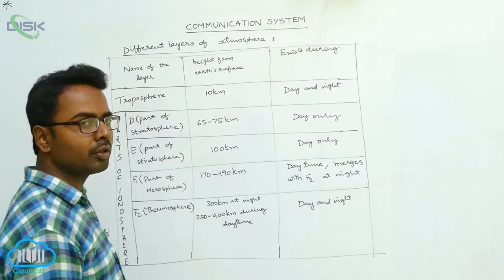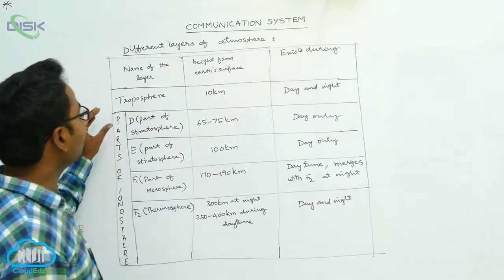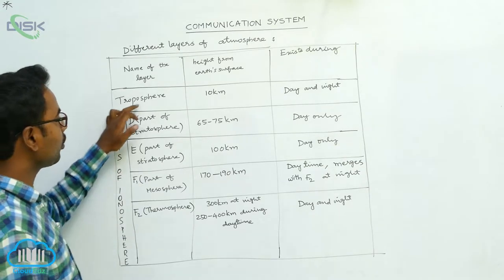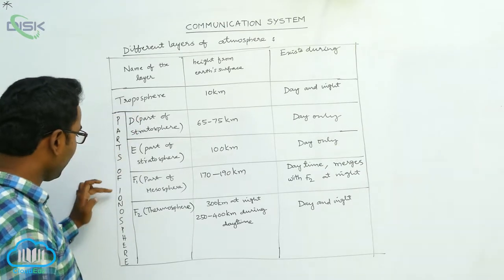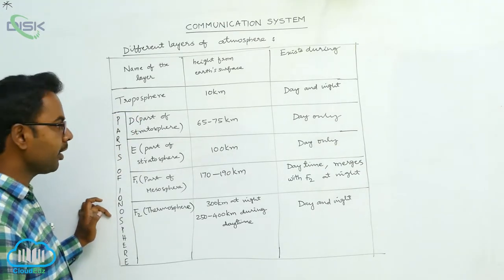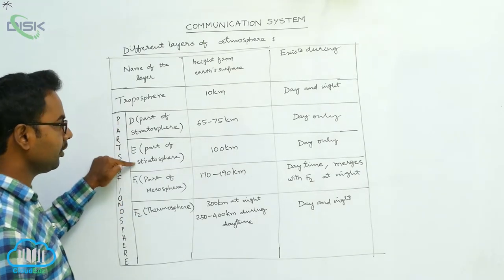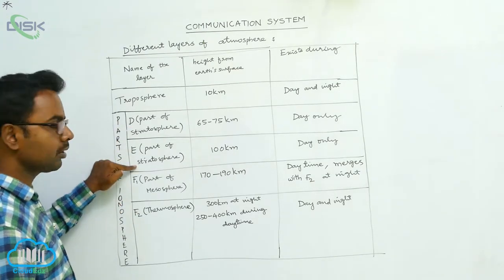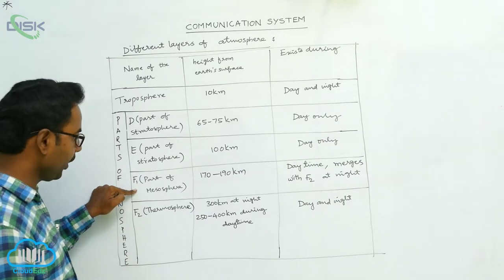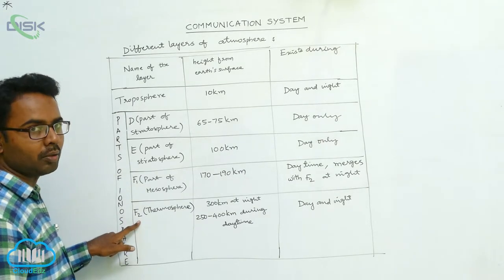Here we see different layers of atmosphere. In the atmosphere there are different layers basically: troposphere and ionosphere. The ionosphere is divided into four parts — D and E, which are parts of the stratosphere; F1 is the part of mesosphere; and F2 is the part of thermosphere.